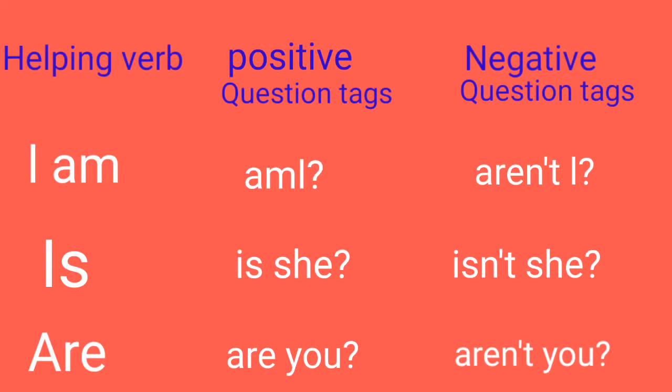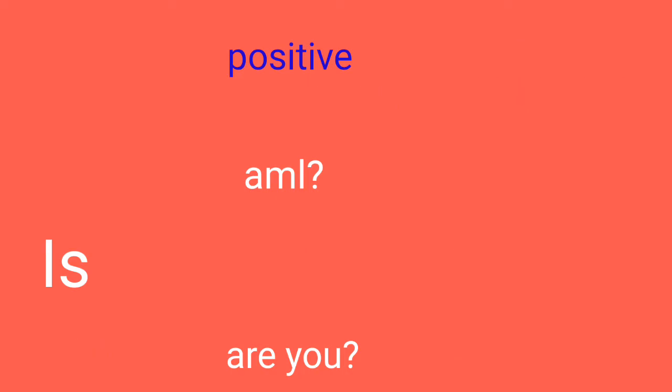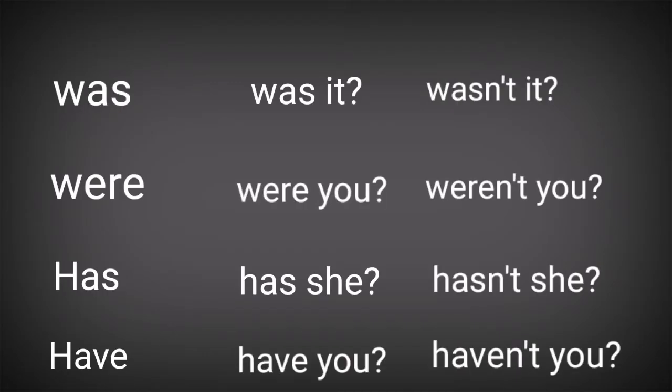Helping verbs with positive tag and negative tag. Am: positive tag — am I; negative tag — aren't I. Is: positive tag — is she; negative tag — isn't she. Are: positive tag — are you; negative tag — aren't you. Was: positive tag — was it; negative tag — wasn't it. Were: positive tag — were you; negative tag — weren't you.